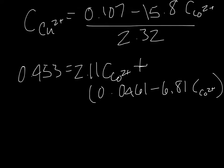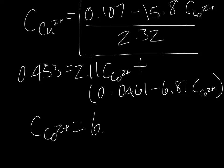Now we have our first equation with our concentration of copper 2+ replaced with the expression here. We can combine like terms and solve for the concentration of cobalt, which turns out to be 6.09 times 10 to the minus third molar.